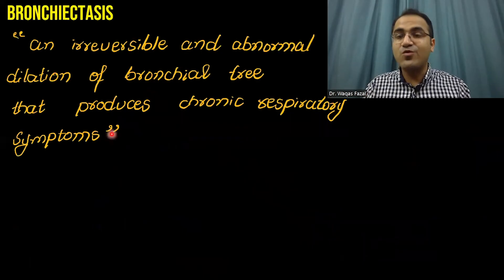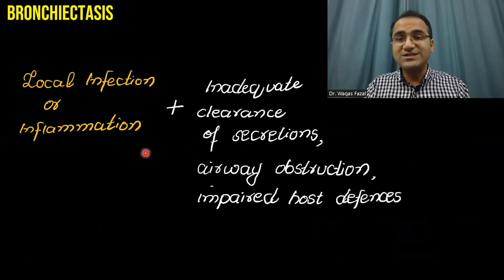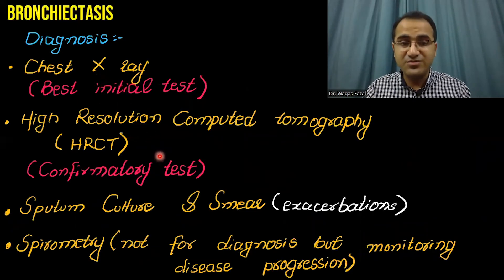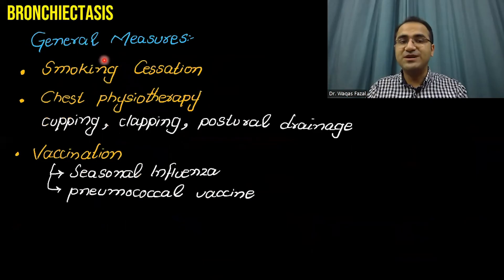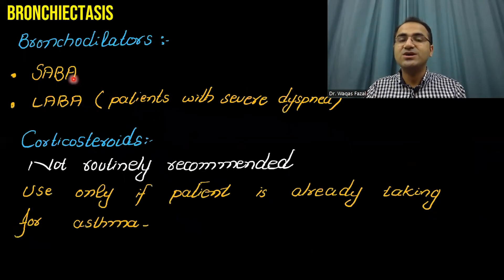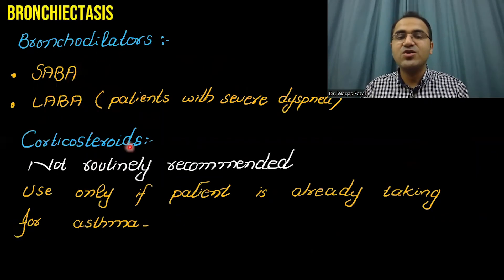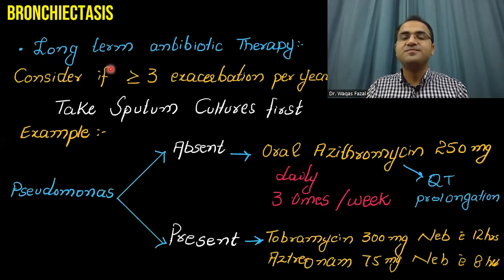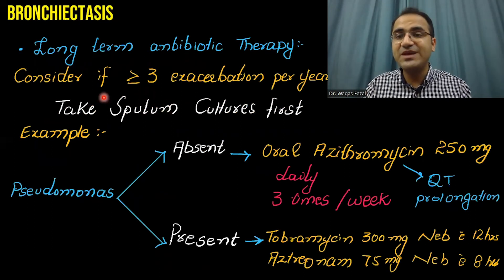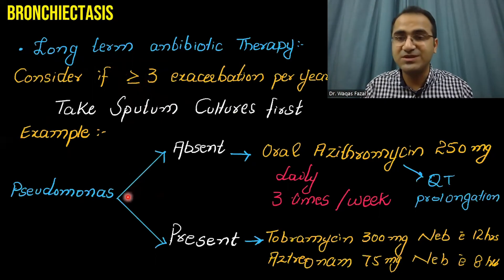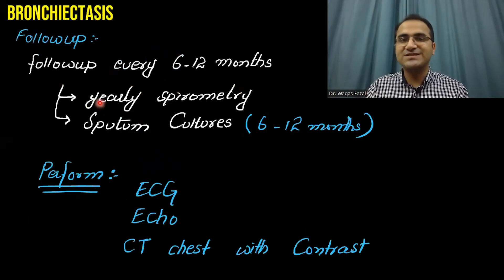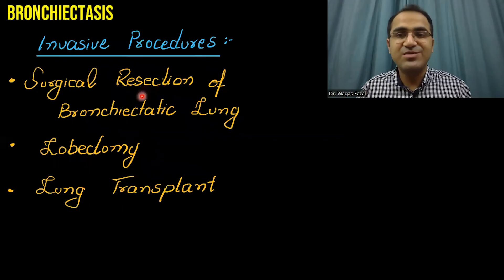In summary, we talked about what bronchiectasis is, its pathophysiology, clinical features, chest X-ray as the best initial test, HRCT as the confirmatory test, long-term management with smoking cessation, chest physiotherapy, vaccination, limited use of bronchodilators, corticosteroids not routinely used, mucoactive agents, and long-term antibiotic therapy based on pseudomonas status with cultures taken first. We also covered exacerbation management and follow-up with ECG, echocardiogram, and possible surgical interventions.